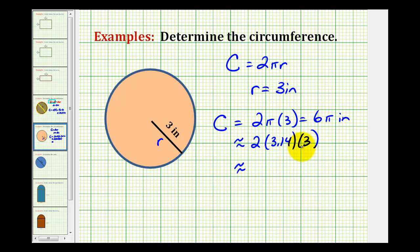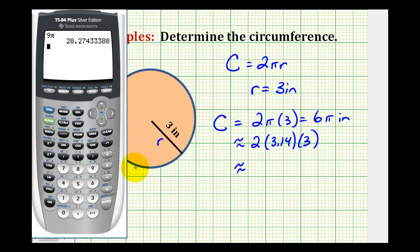Let's go ahead and get our decimal approximation on the calculator. So six times pi is approximately eighteen point eight five inches.